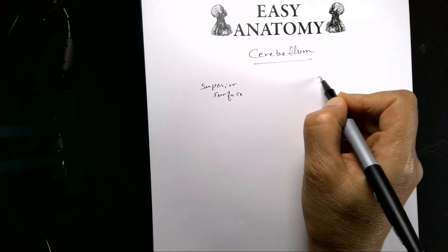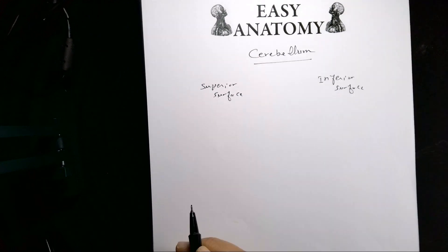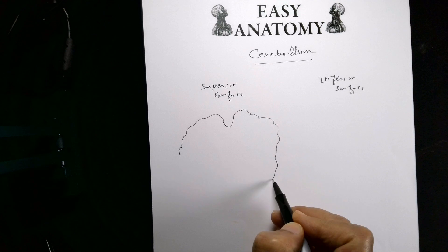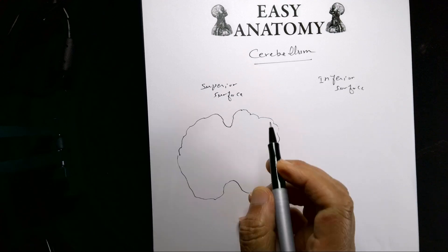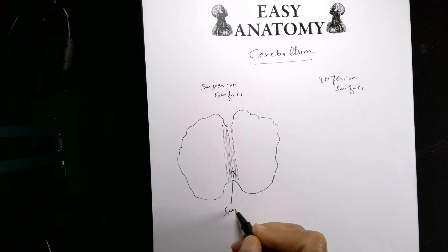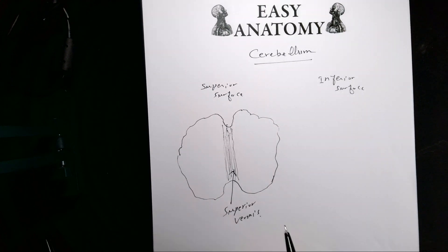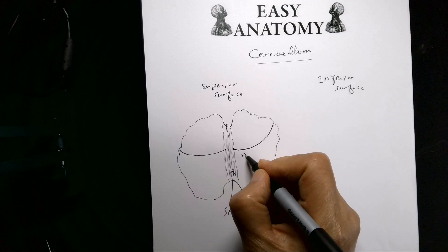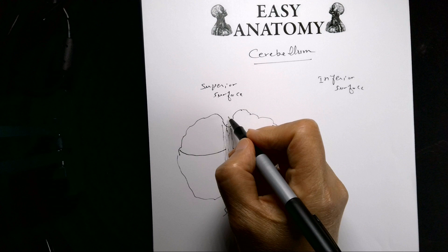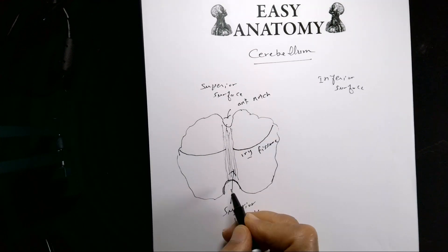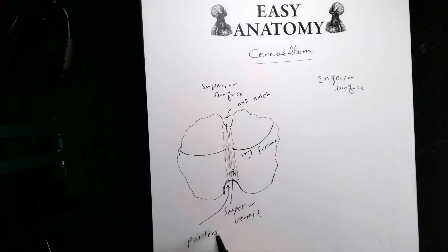From the superior surface, it's hard to demarcate between the right and left sides of the cerebellum except for the central body, which is called the superior vermis. From each side you can see a fissure called the primary fissure. You also have an anterior notch and a posterior notch, the posterior notch being deeper.